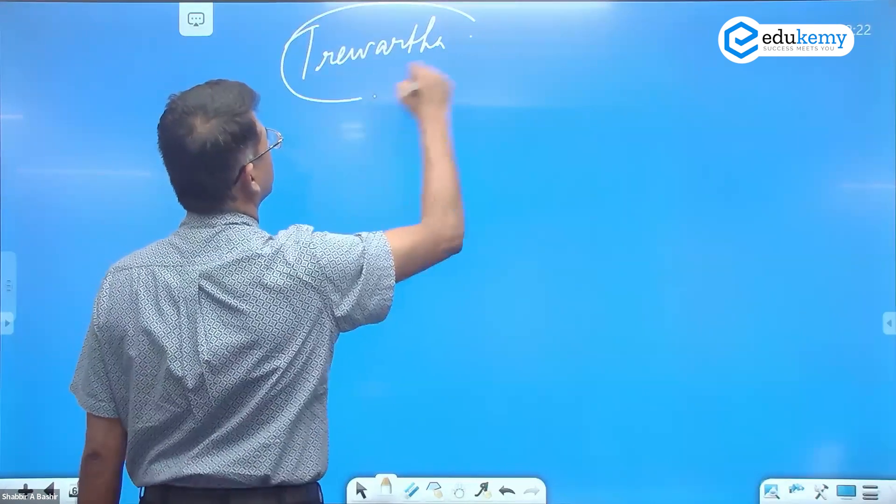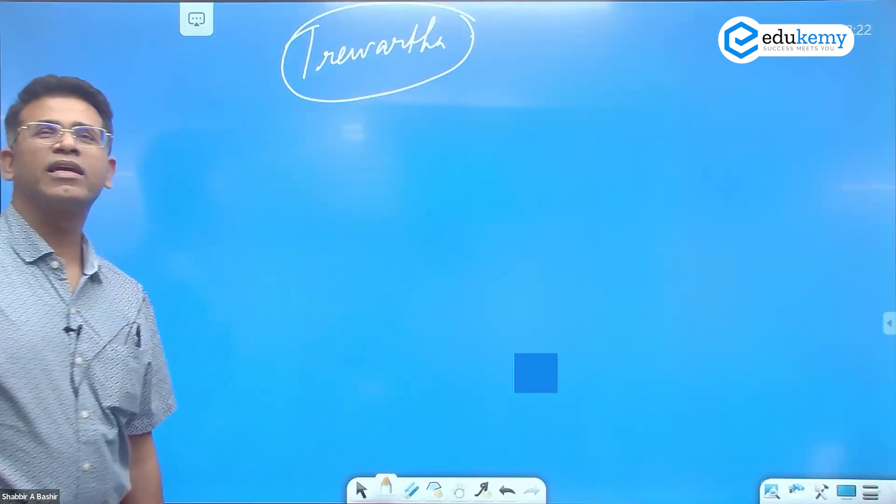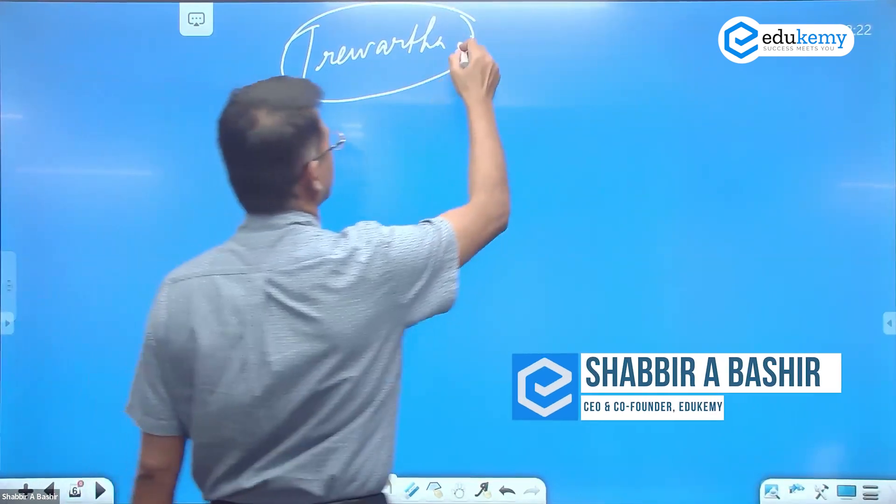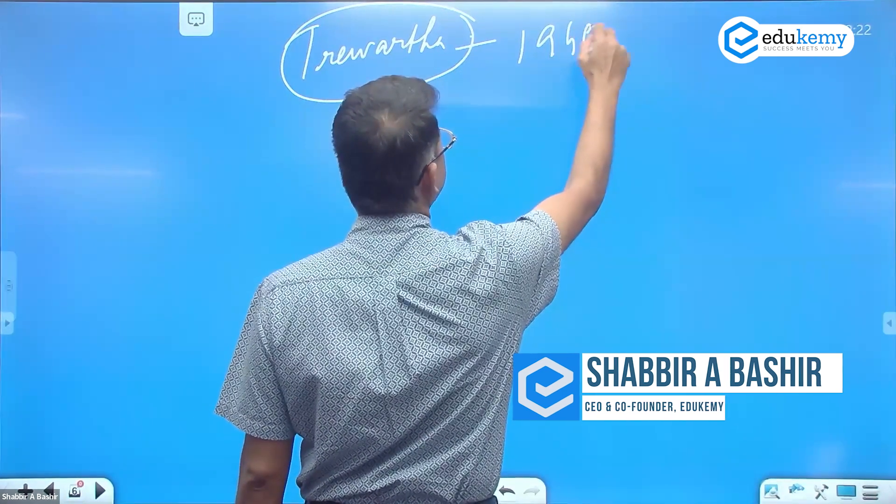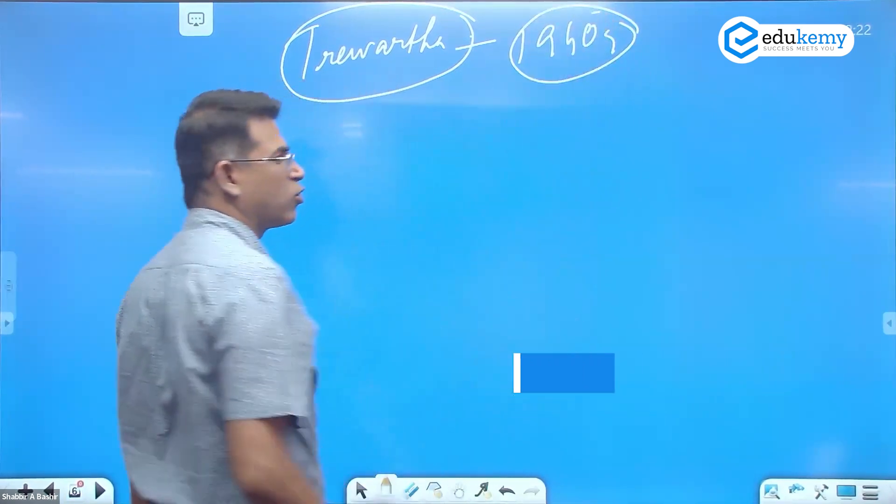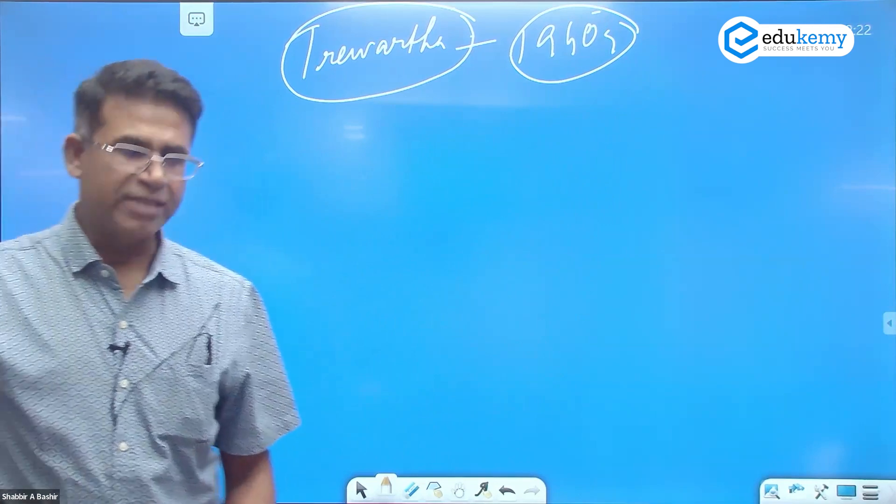We talk about Thriwartha. Thriwartha comes much later, 1940s, when Thornwaite was developing his second scheme.